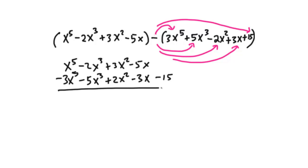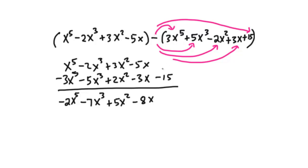Now let's combine like terms. x to the fifth minus 3x to the fifth is negative 2x to the fifth. Negative 2x cubed and negative 5x cubed gives negative 7x cubed. Plus 3x squared plus 2x squared gives 5x squared. Negative 5x minus 3x gives negative 8x. And there's no constant in the first polynomial, so we bring down negative 15. Our final answer is negative 2x to the fifth minus 7x cubed plus 5x squared minus 8x minus 15.